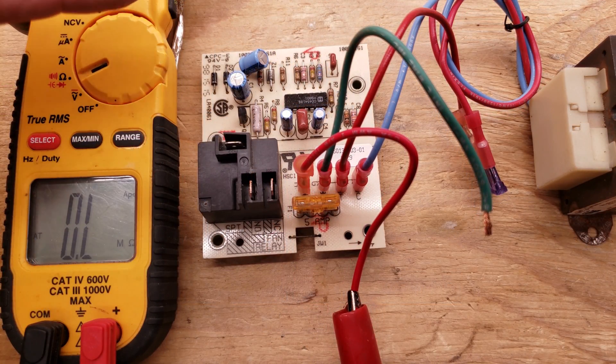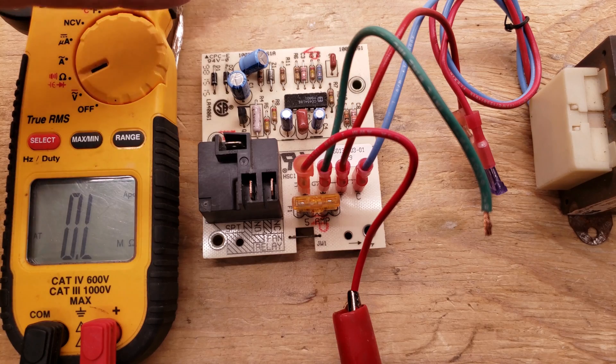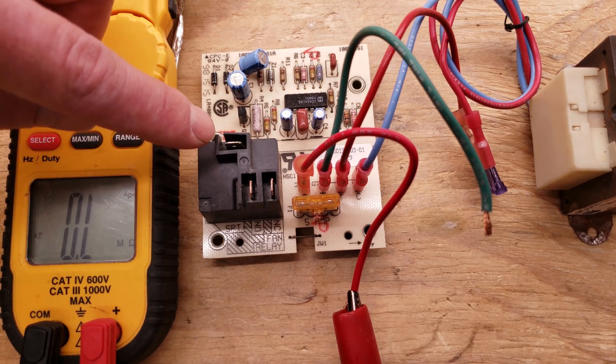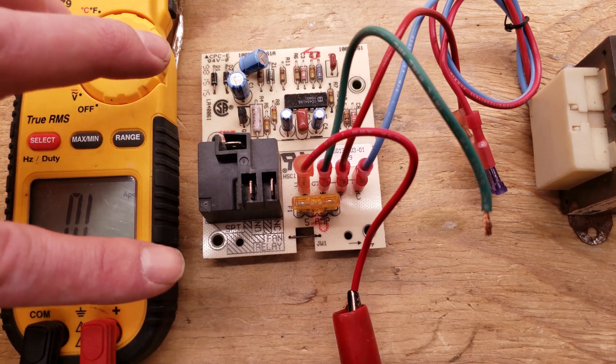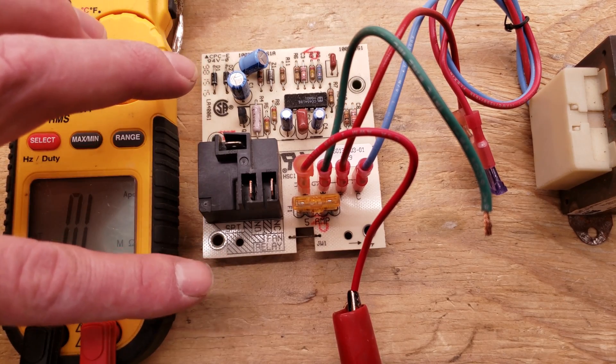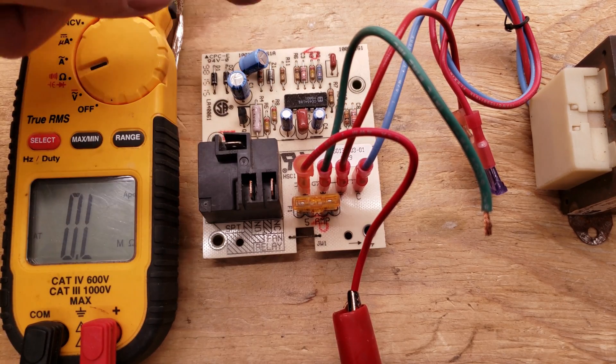So when you're troubleshooting these control boards in the field, you want to go ahead and turn the power off to the air handler first. Disconnect your power wire to the blower motor and your input power wires. When you're setting those wires aside, make sure that they don't short to the ground frame if you were to go ahead and turn your air handler back on again.